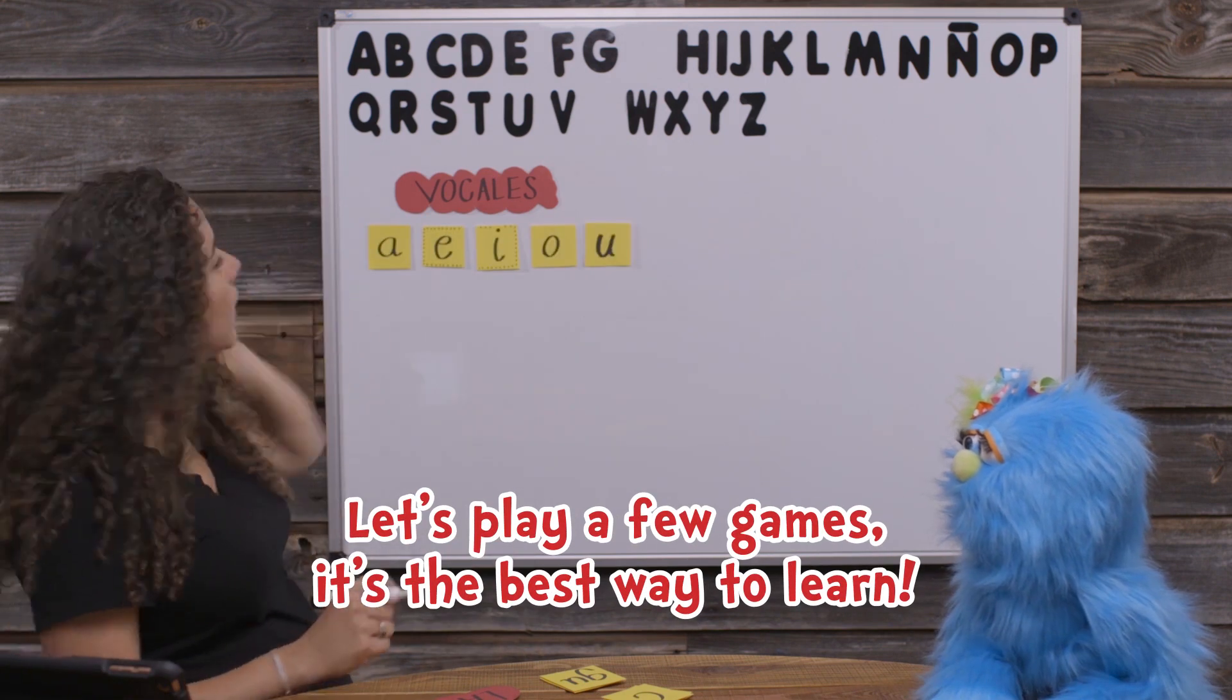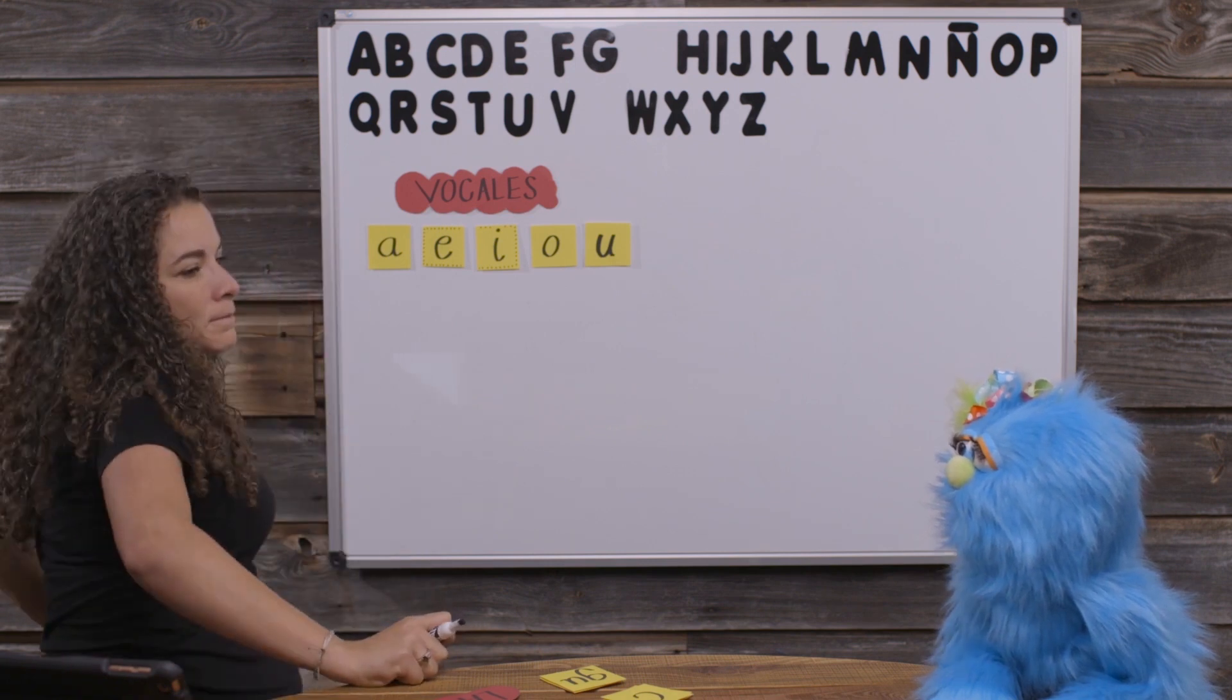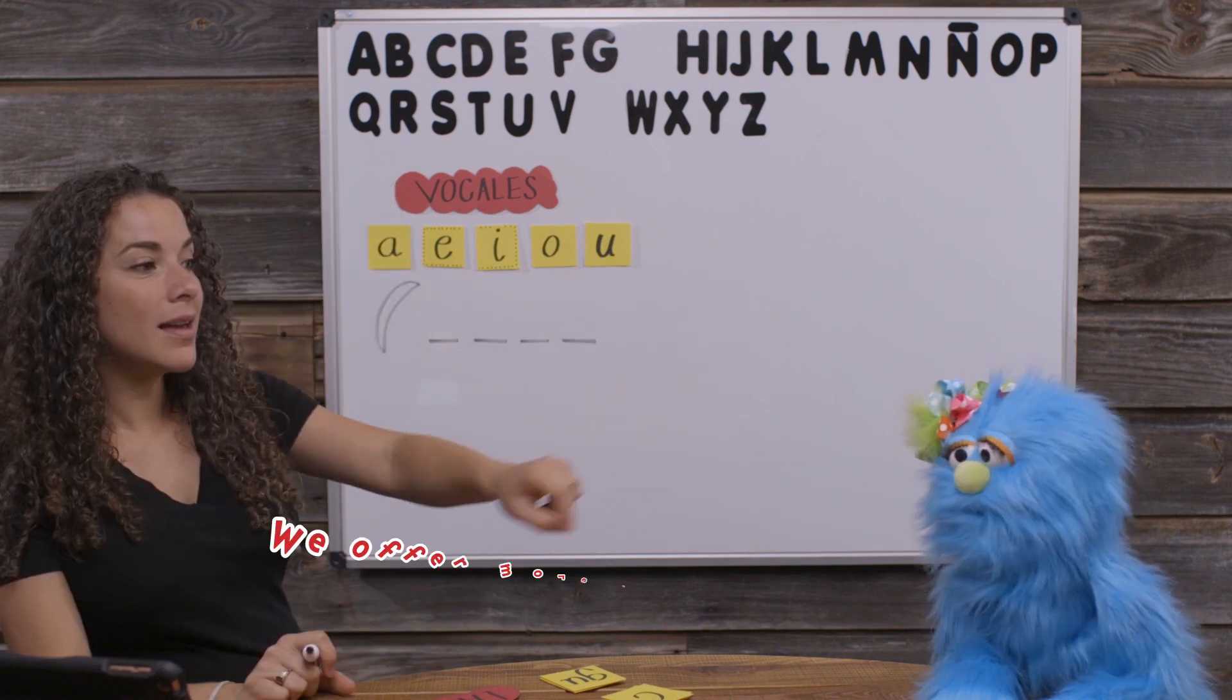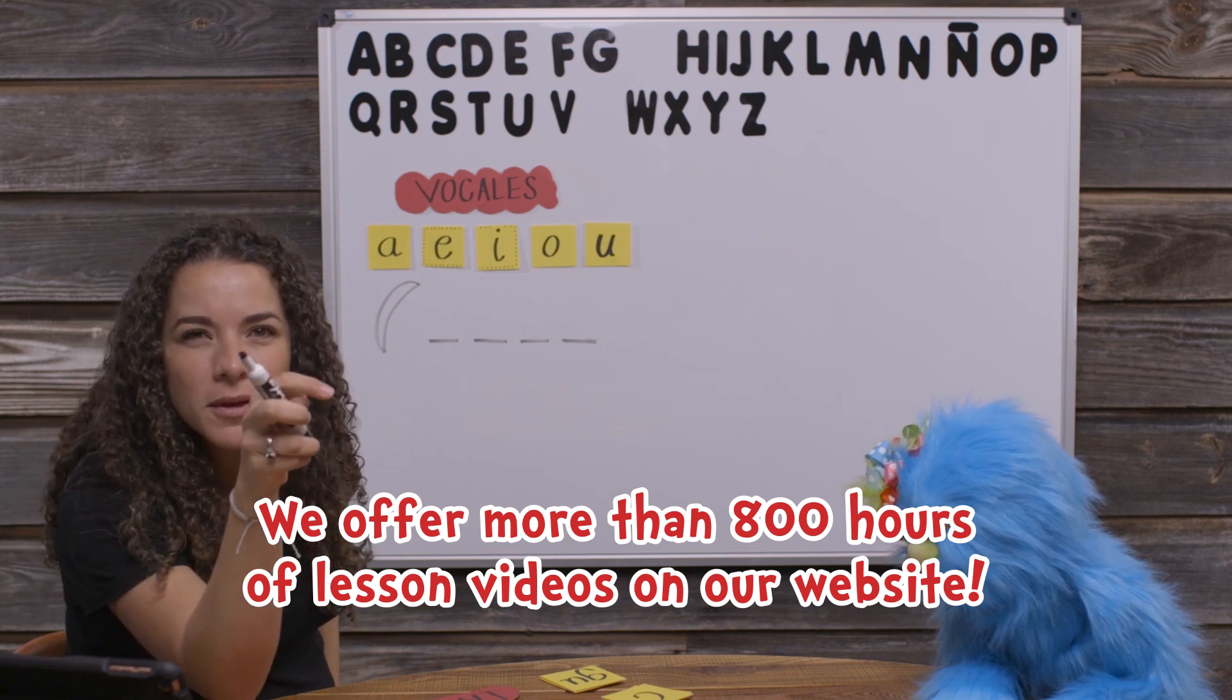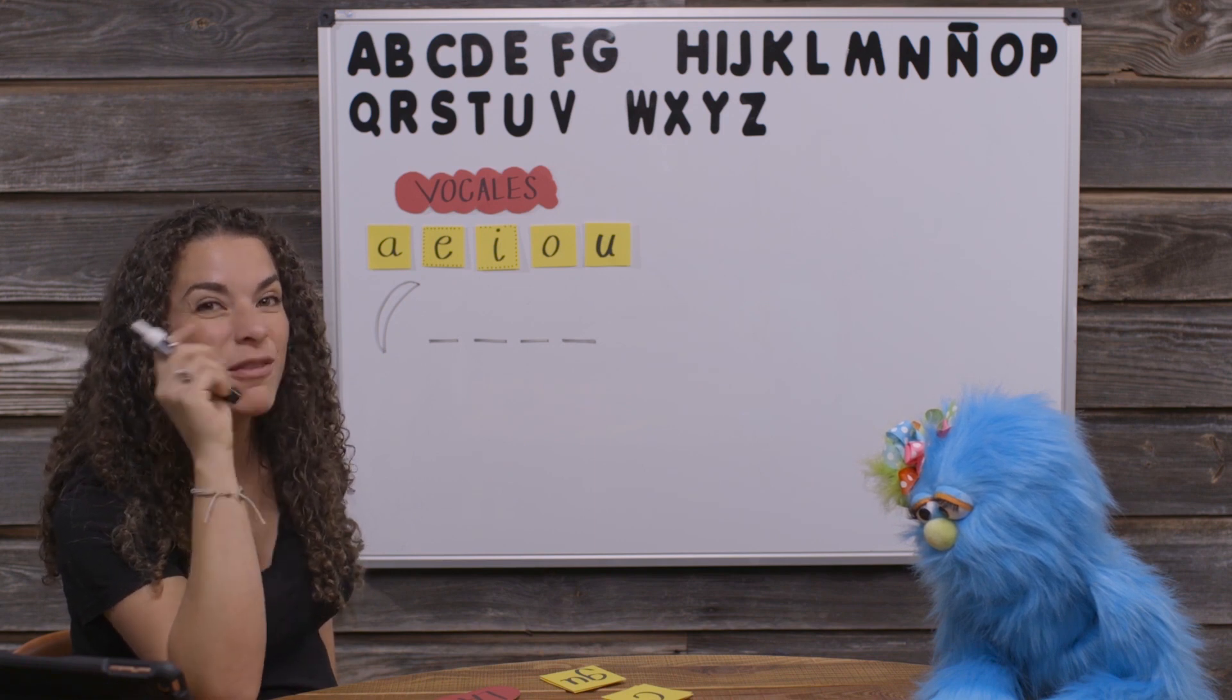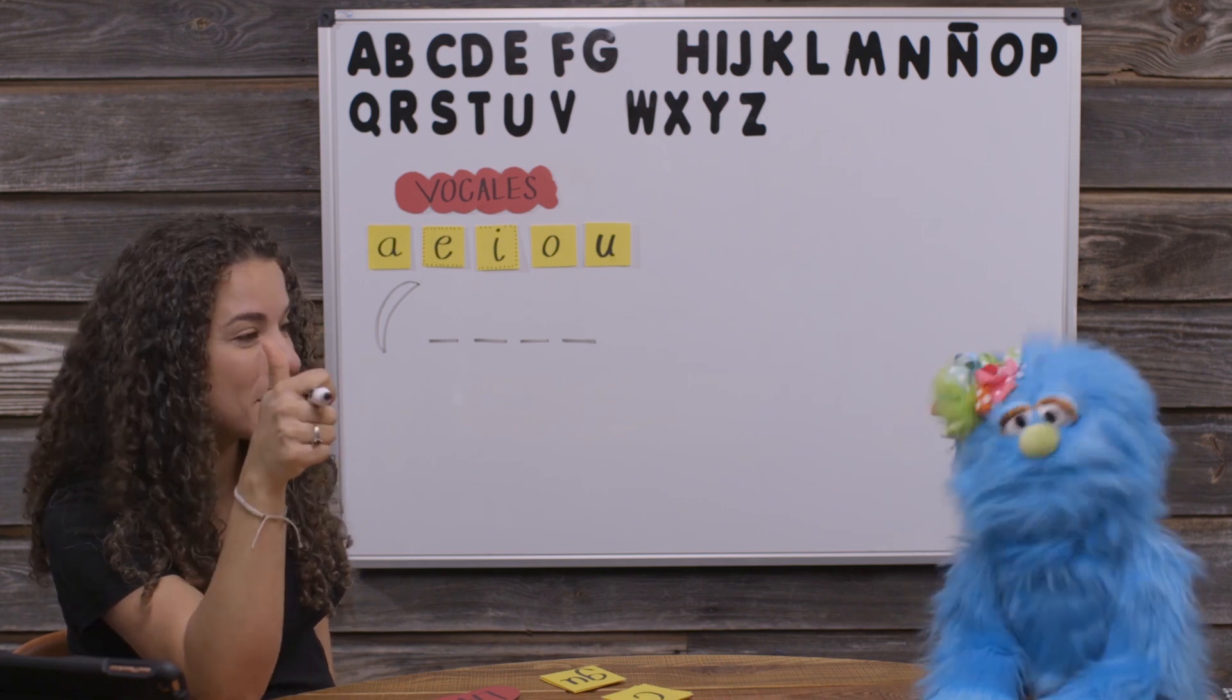So, our first word is going to be... If you say the wrong letter, you guys are in Rufy's team. If you say the wrong letter, I get a point. If you say the right letter, she gets a point or you get a point. Okay? Si.